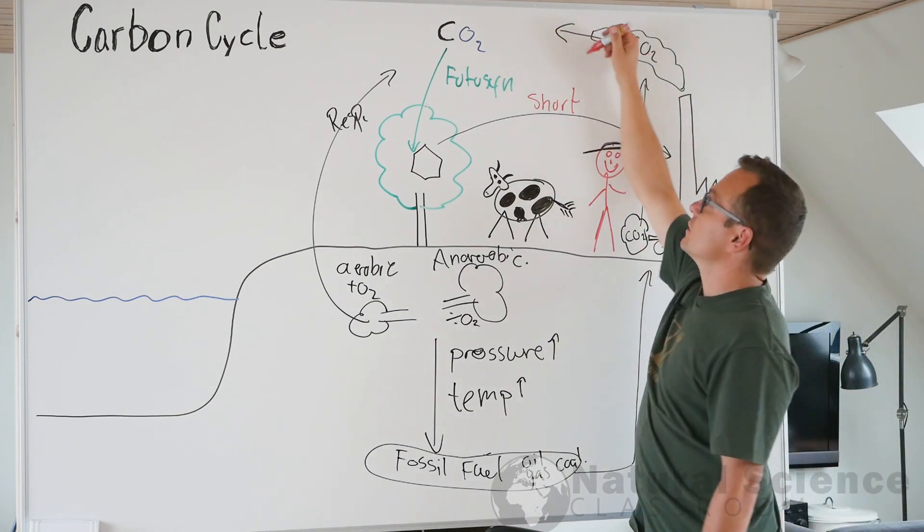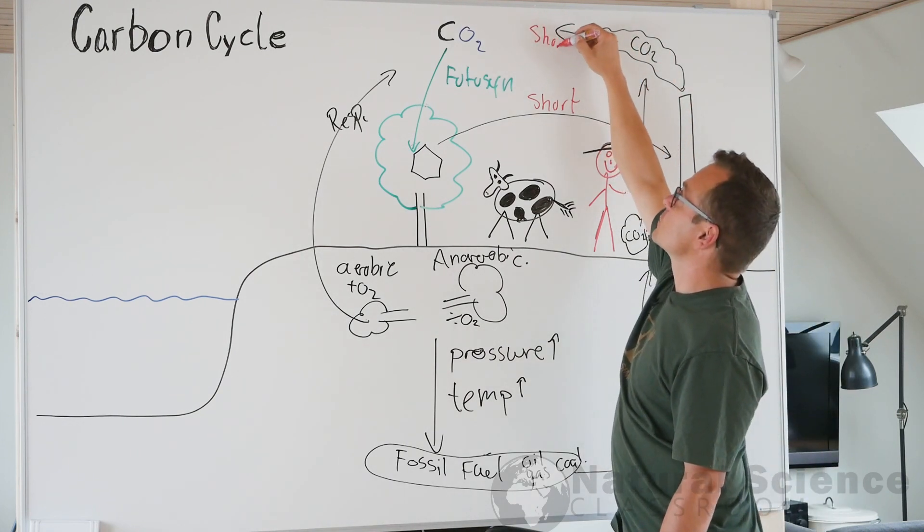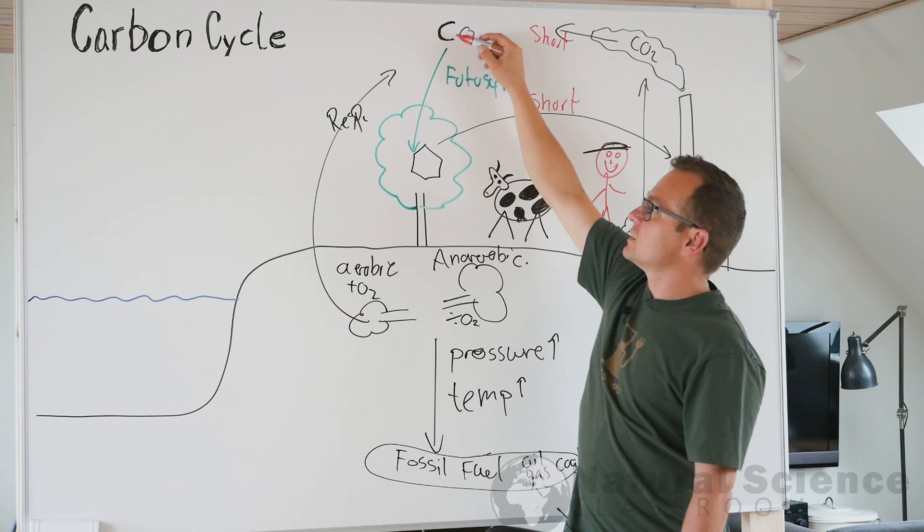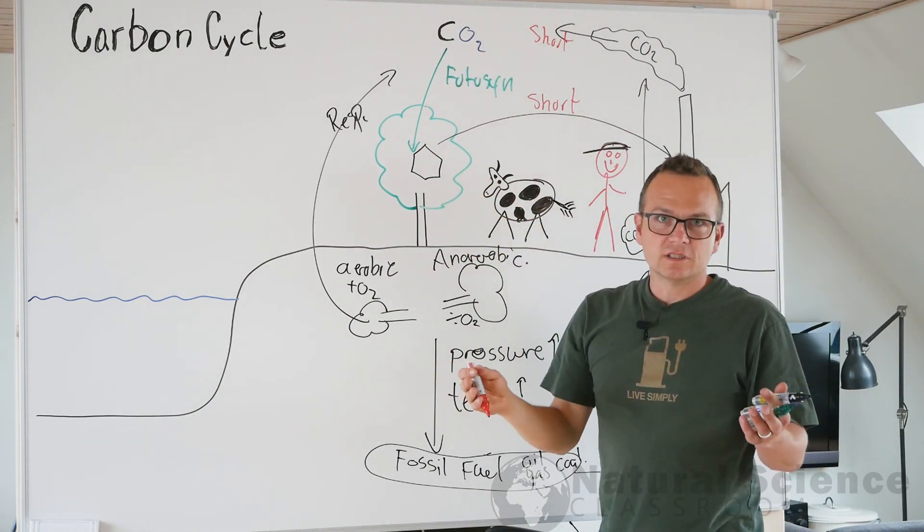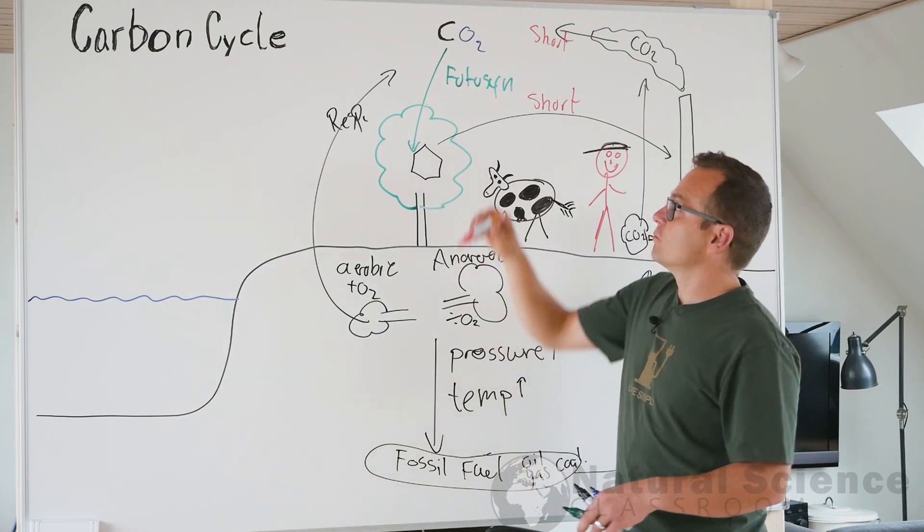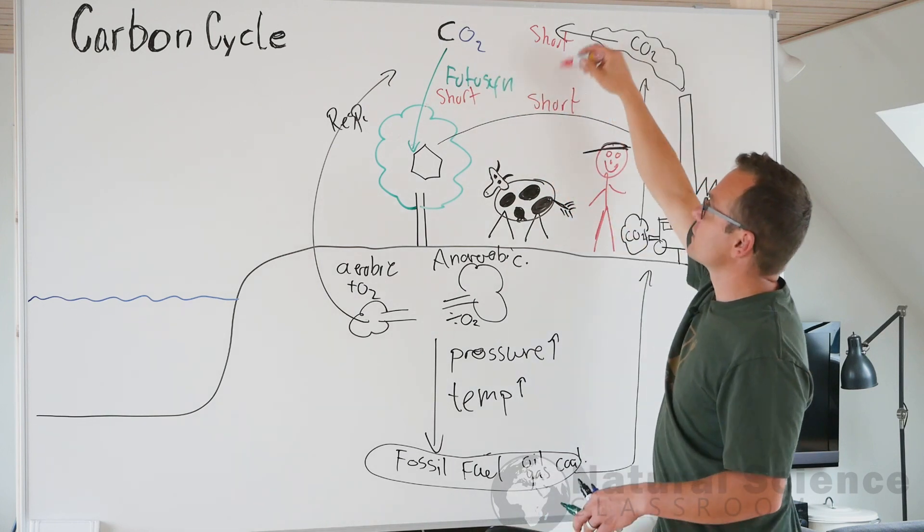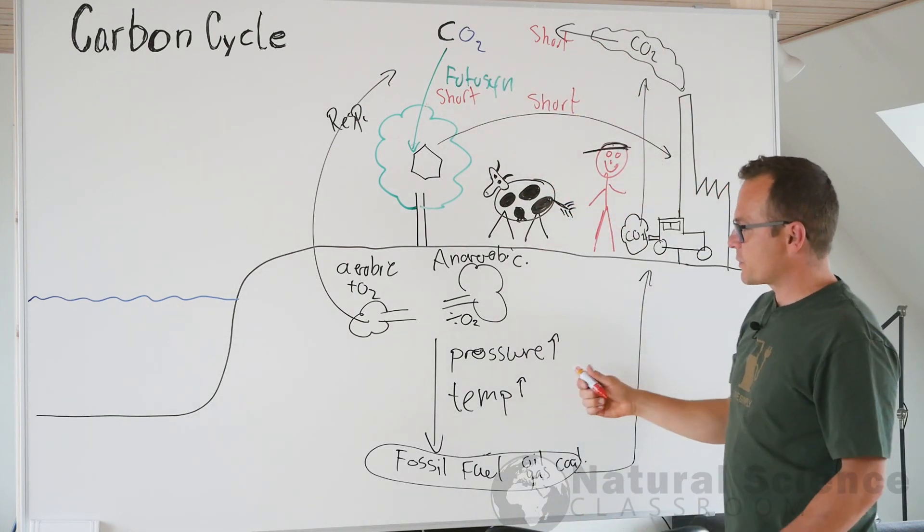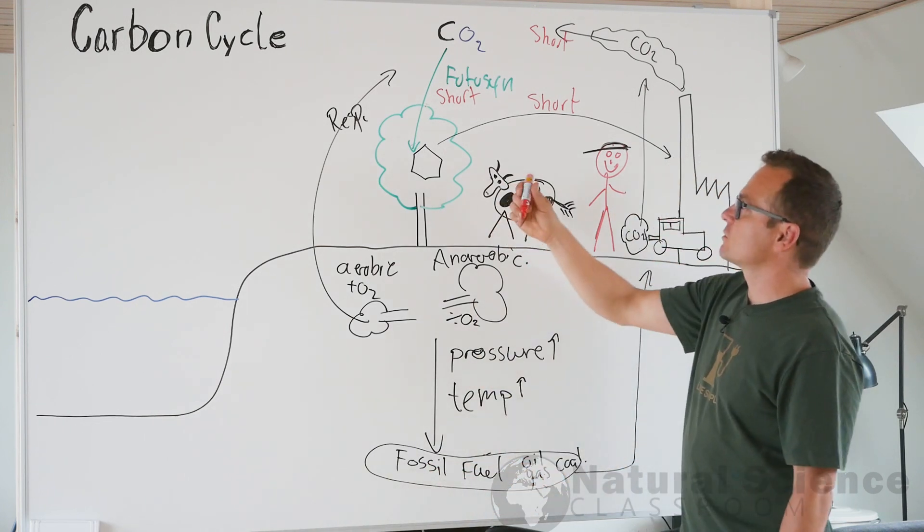So does when you burn it and emit CO2, it takes short time as well. How long time does it take to absorb the CO2 in the photosynthesis? It takes like a growth season, maybe a month, but at least compared to how long time it takes to make fossil fuels, it's really short time.